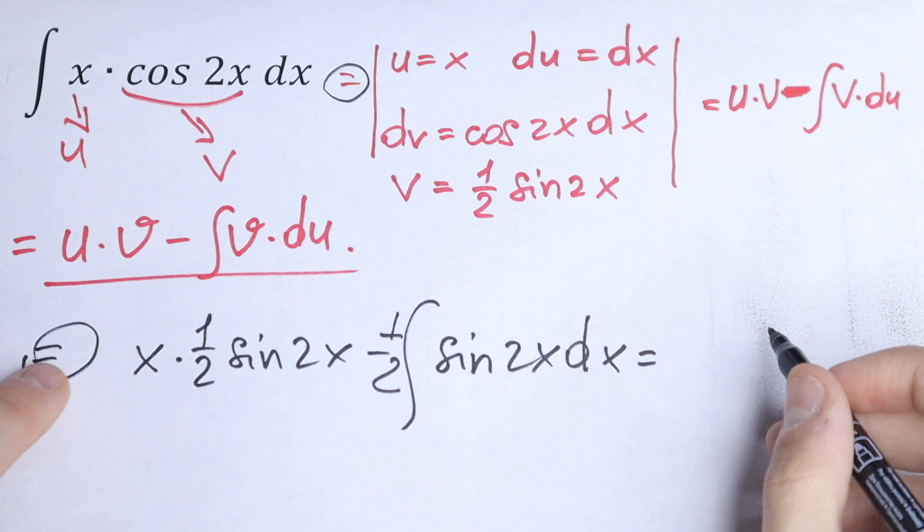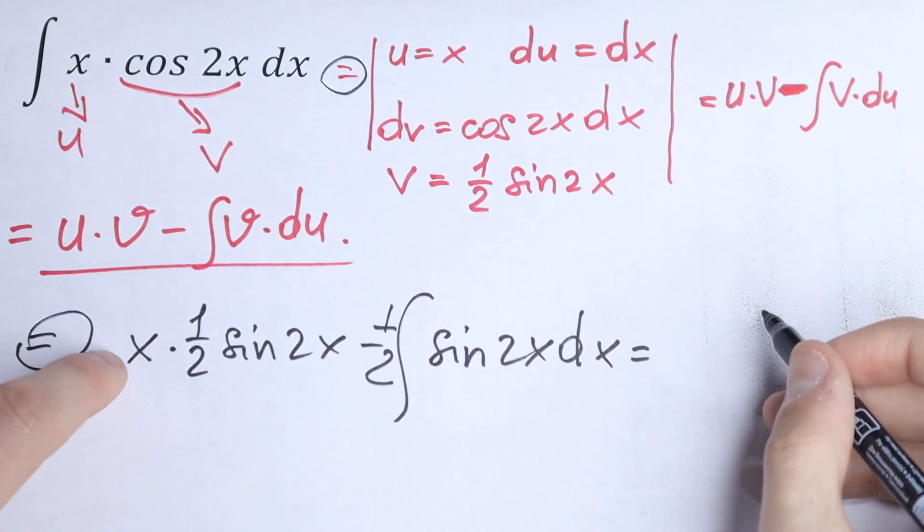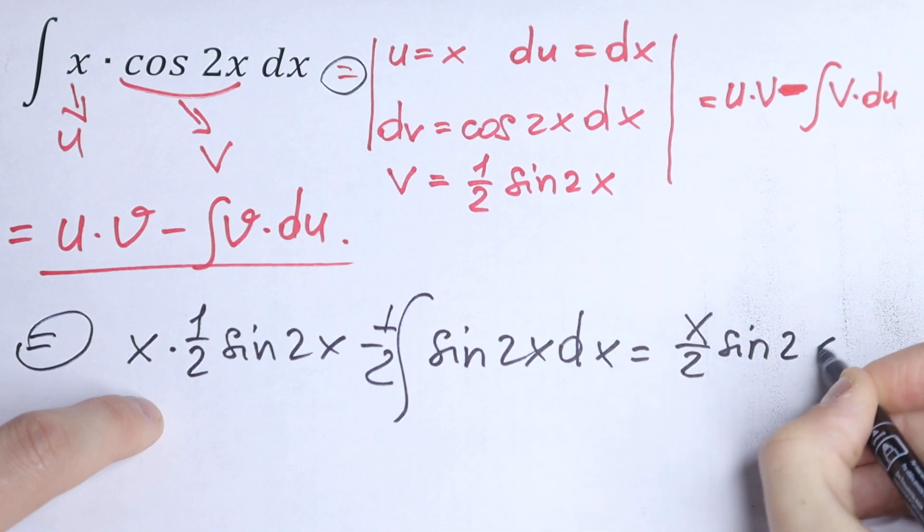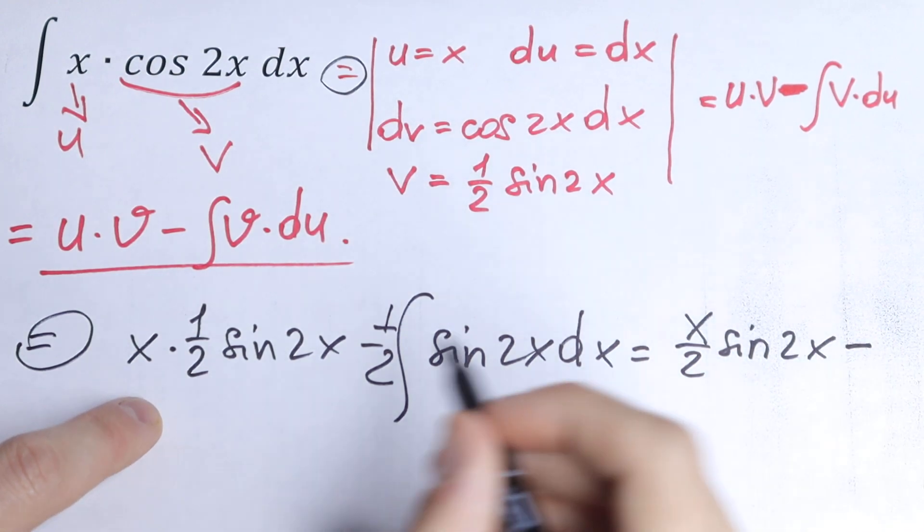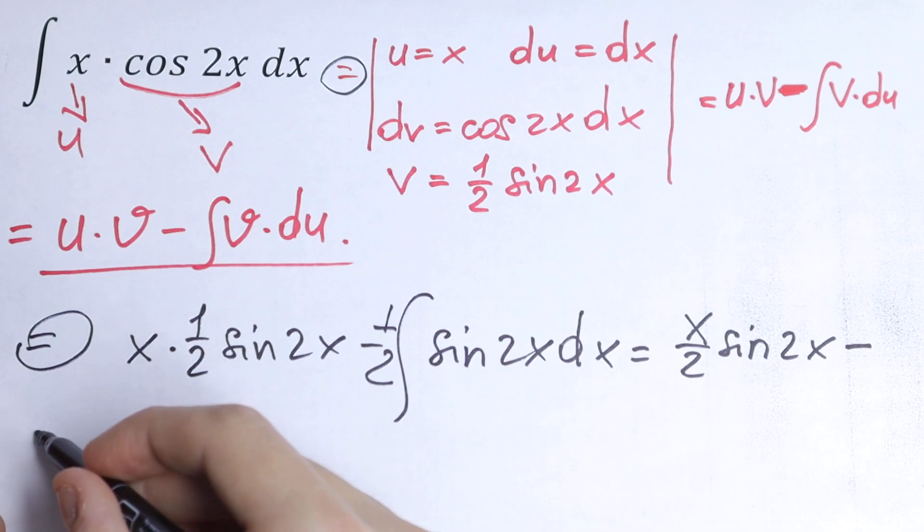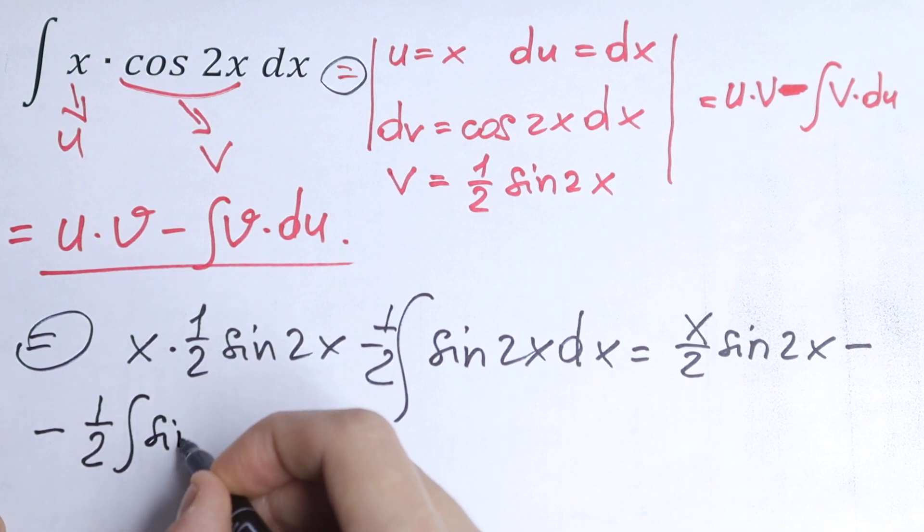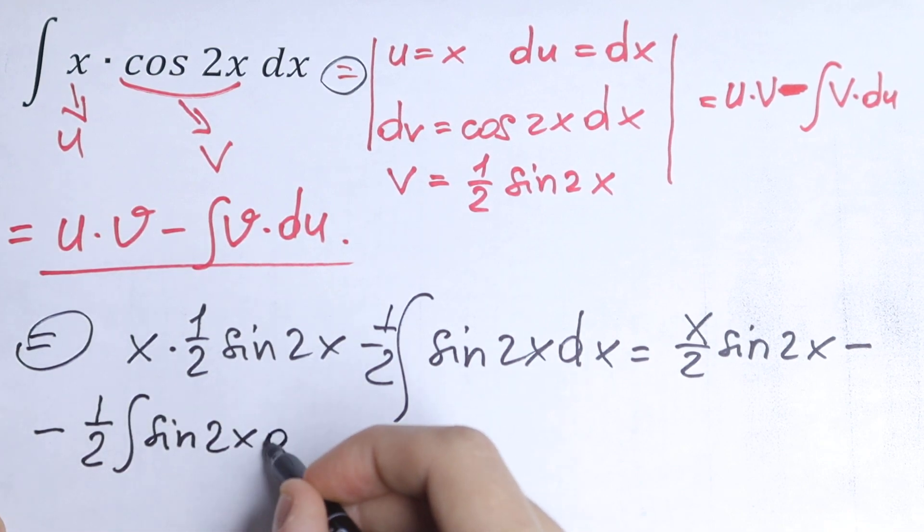So as a result, let's simplify this. We can multiply x by one-half, so we will have x over 2 sine 2x minus one-half integral of sine 2x dx.